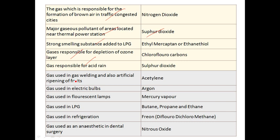The gas used in gas welding and also in the artificial ripening of fruits is acetylene.